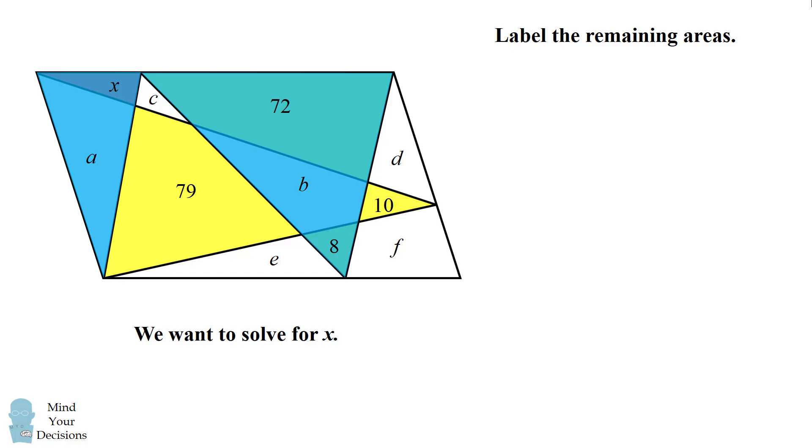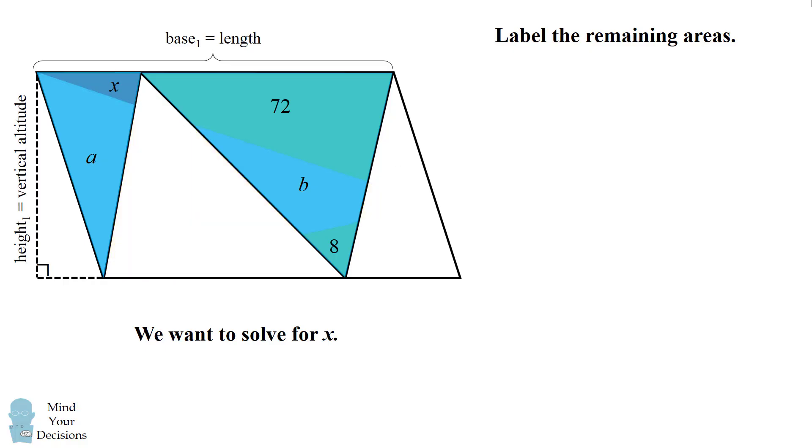One set of triangles will be these two blue triangles. They span the length of the parallelogram, and they have the same height as the vertical altitude of the parallelogram. So if we focus on just these two triangles, we can see that their area will be half the area of the parallelogram, and we can also calculate their area by adding up these letters. We have x plus a plus 72 plus b plus 8.